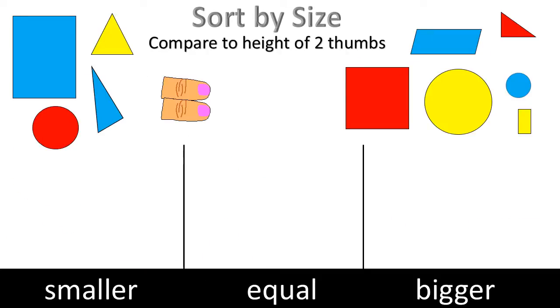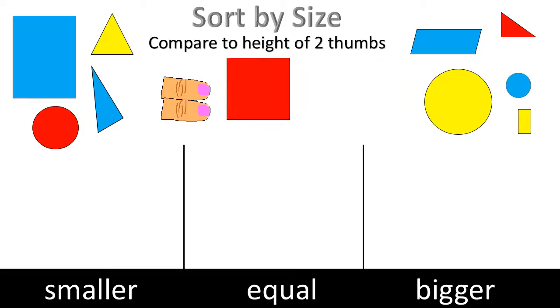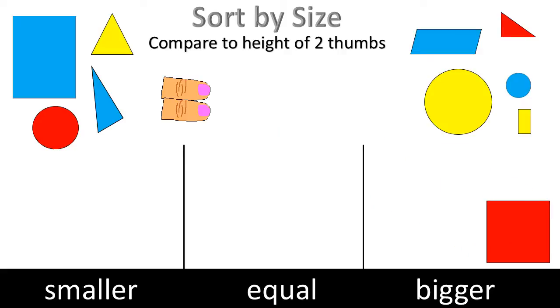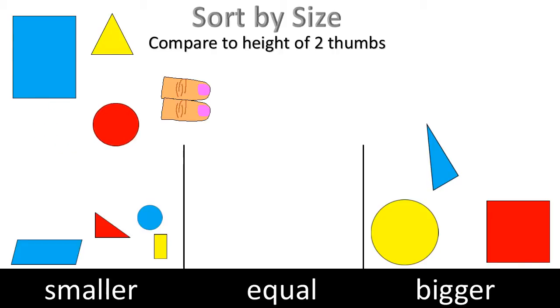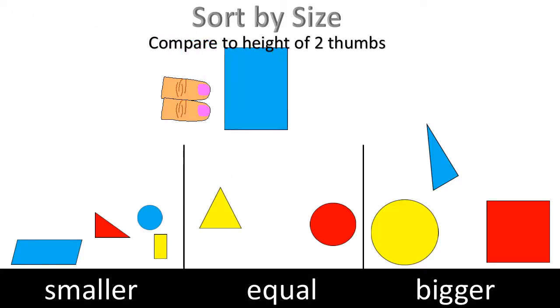Sort by size. Compare to height of two thumbs. Bigger. Bigger. Smaller. Bigger. Smaller. Smaller. Bigger. Smaller. Bigger. Smaller. Equal. Bigger.